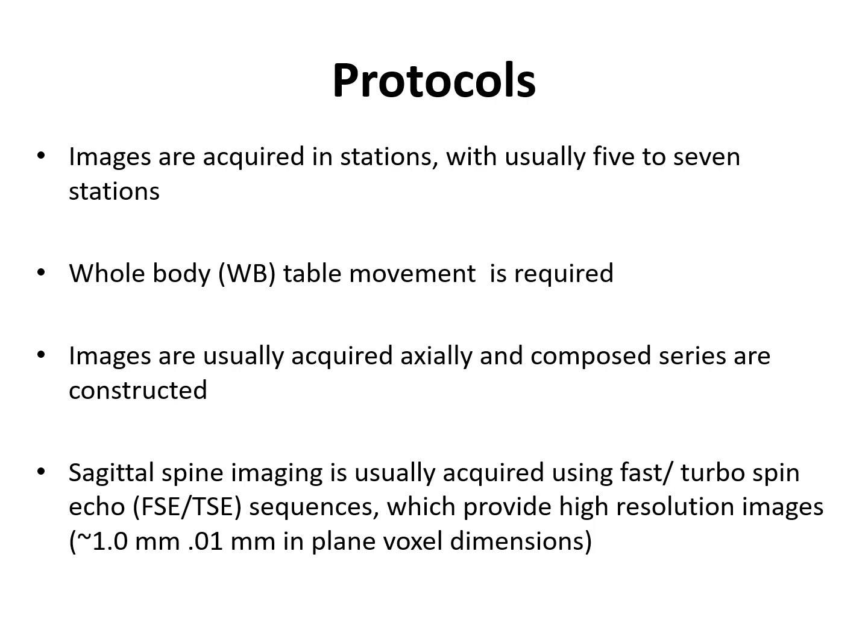Images are acquired in stations, usually 5 to 7 stations, and whole body table movement is required along with whole body receiver coil coverage. Images are usually acquired axially and later composed series are constructed. Sagittal spine imaging is usually acquired using fast or turbo spin echo sequences, which provide high resolution images and serve as complementary morphological evaluation alongside other sequences.